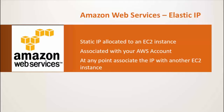You can at any point in time associate the IP with another EC2 instance. You can very easily disassociate an existing Elastic IP from an EC2 instance and just map it to another EC2 instance in your AWS account.